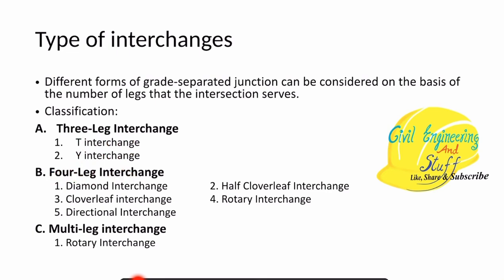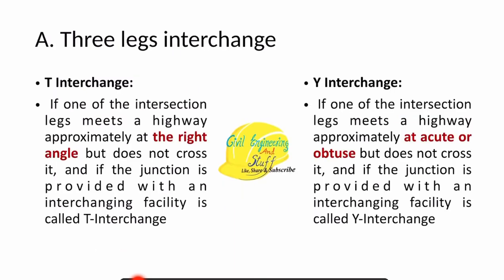In a four-leg interchange, we have the diamond interchange, cloverleaf, directional interchange, half-cloverleaf, and rotary interchange. In multi-leg, we have the rotary interchange. We are going to discuss only the main types. In a 3-leg interchange, there are two categories: T-interchange and Y-interchange.